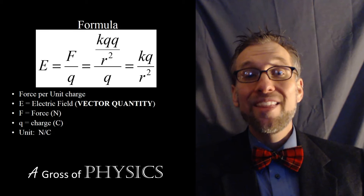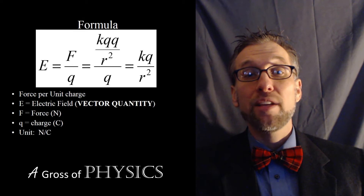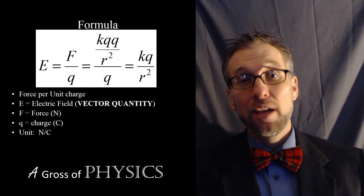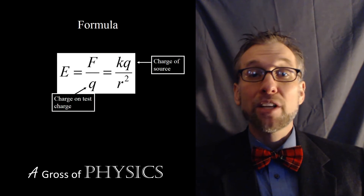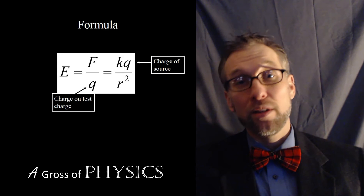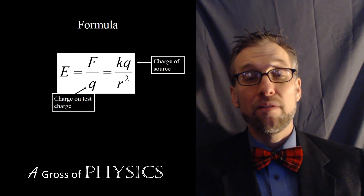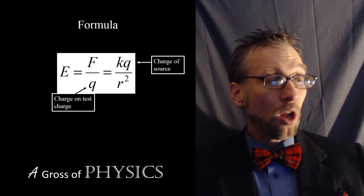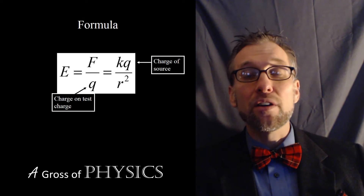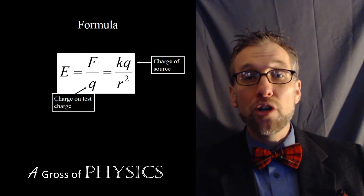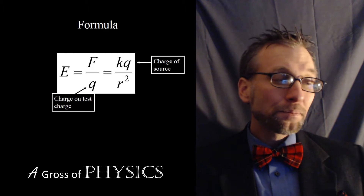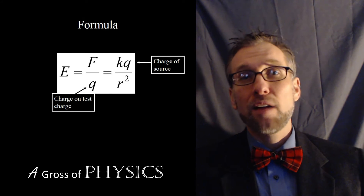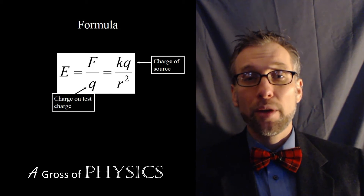If it's E equals F over Q, that Q is the charge of the test charge that's in the field. If it's KQ over R squared, the Q is for the object that is creating the field. In the example of the Van de Graaff generator, that would be the net charge of the Van de Graaff generator itself. So we can handle either knowing the charge in the field or the charge of the thing creating the field.